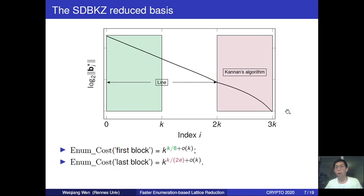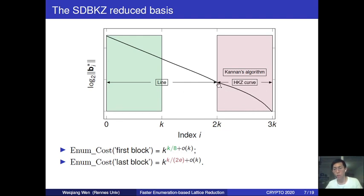Before continuing, I make one more remark about the last block. In the following, I will always assume for this last block that each position reaches the first minimum of the corresponding sub-block from that position to the end. This corresponds to the so-called HKZ-reduced basis, which is why I call the corresponding curve the HKZ curve. Two remarks: first, this is not guaranteed by SDBKZ reduction; second, this additional assumption does not introduce a larger overall time complexity.